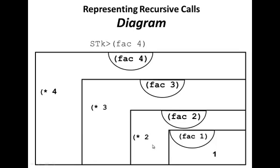And FAC two calls FAC one and multiplies that by two. Finally, FAC one returns one. And then we're able to see more easily what are the calculations that we need to gather back up. Hopefully these representations are helpful for you in both writing and tracing recursive functions.